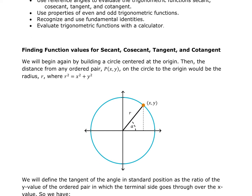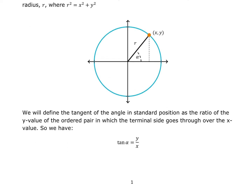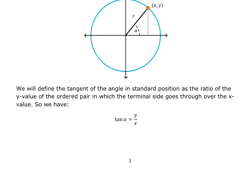We're going to start by building a circle centered at the origin. When we look at the distance from the center to some point on the circumference of the circle, we call that r. So r² = x² + y² all day long. The angle of rotation is from the positive x-axis, and the terminal side will be wherever r is. We define the tangent as the ratio of my y value over my x value, so I don't even need the r value.